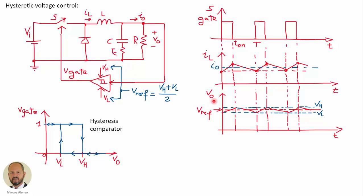The output voltage has a ripple superposed to the DC output voltage. When the output voltage is below the high level of the hysteretic comparator, the switch is turned on. When the output voltage reaches the high level, the switch is turned off and remains off until the output voltage reaches the low level. The output voltage is always between the high level and the low level, and its average value equals the reference voltage injected into the hysteretic comparator.